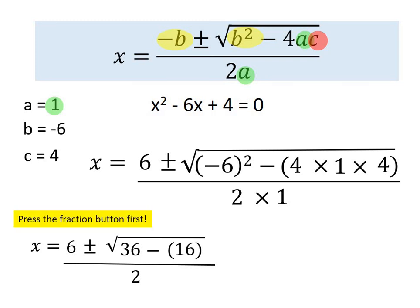So the first thing I need to do is press the fraction button, and I'm going to write 6 plus the square root of 36 minus 16. I then use my arrow button to the denominator, so that's over 2, and I get the answer of 5.23606, which is 5.24 to 2 decimal places. I then arrow across so that I change the plus to a minus, and I get the answer of 0.7639, which to 2 decimal places is 0.76.